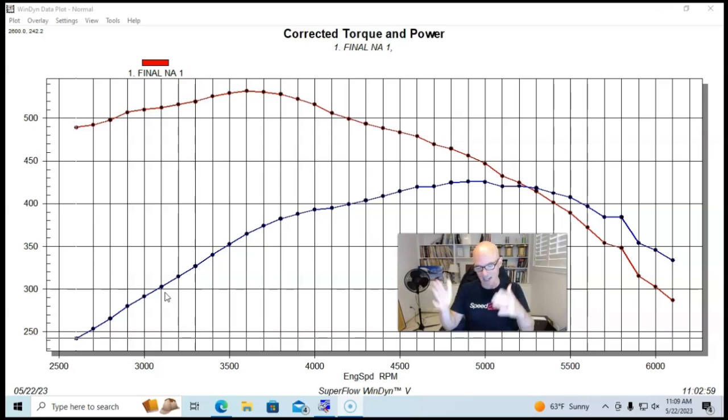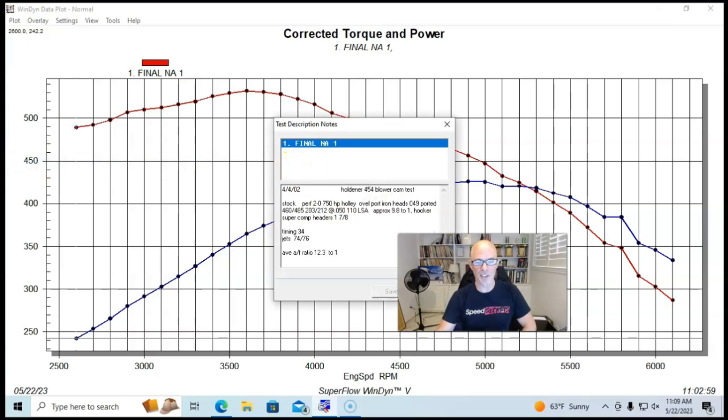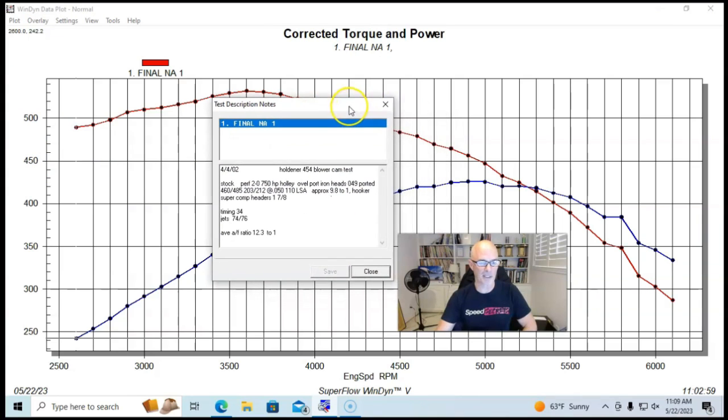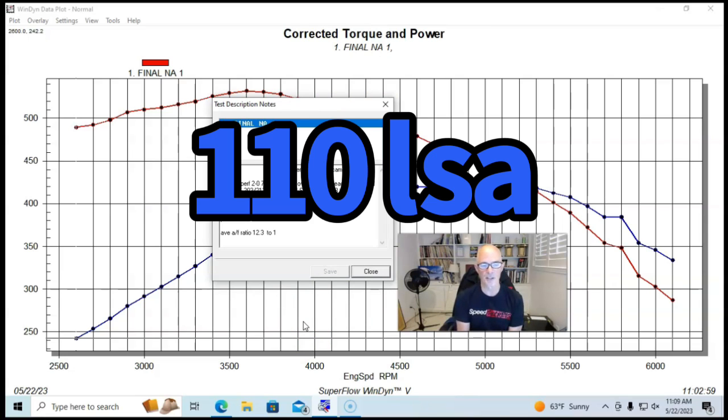We put a very, very small camshaft in this thing. Again, we're thinking torque, so go small in the camshaft. In this case I think I went too small, but the camshaft was small. I think this might have even been an emissions legal camshaft back in the day, and it might still be. This was a Crane, it was 460/485 lift, 203/212 degree duration, and 110 degree lobe separation angle.